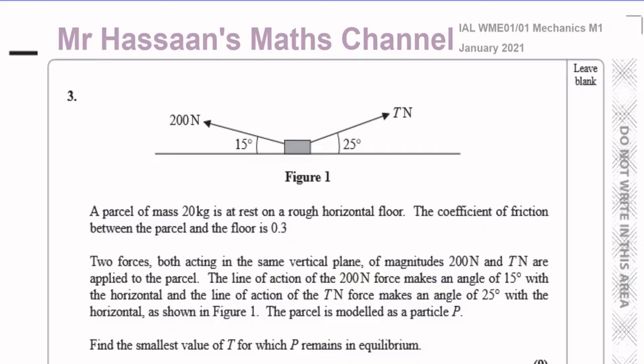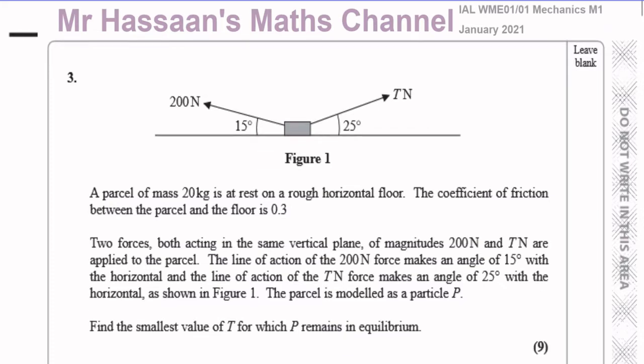Find the smallest value of T — that is the force whose line of action is at 25 degrees — for which P remains in equilibrium.